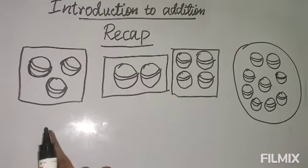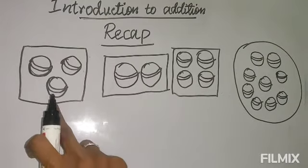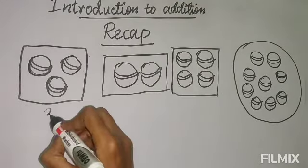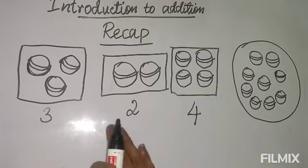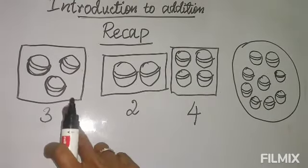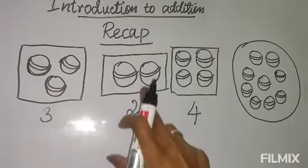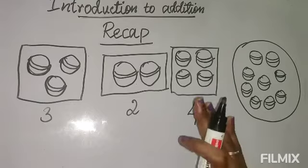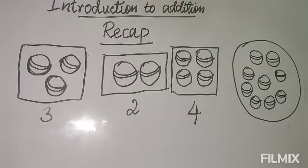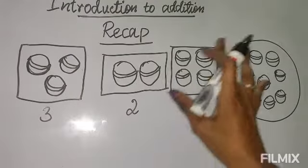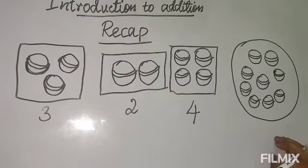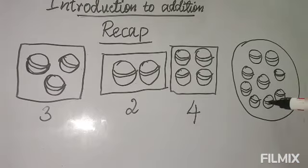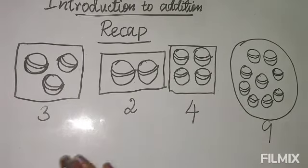Addition means combining numbers. Here is an example: in this box there are three balls, here there are two balls, and here there are four balls. They are in three different boxes - three balls in one box, two balls in another, and four balls in another. Now all the balls from the three boxes we put into one box, and we find how many there are: one, two, three, four, five, six, seven, eight, nine. Total nine.